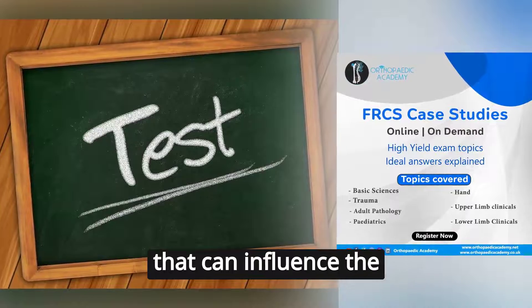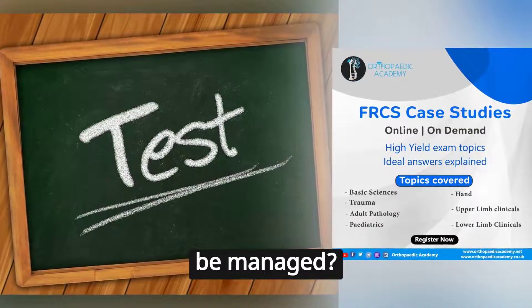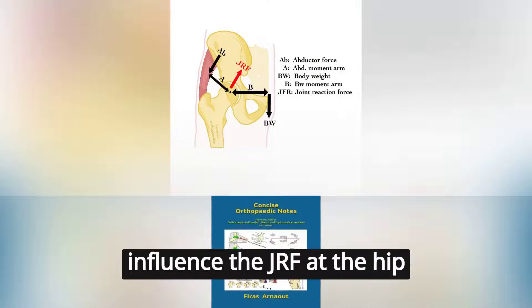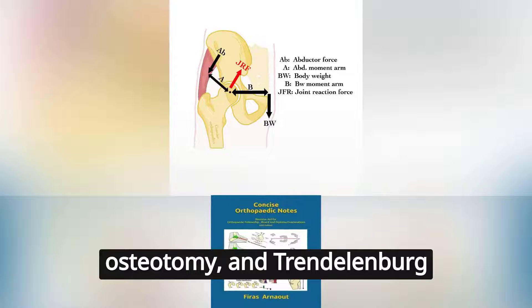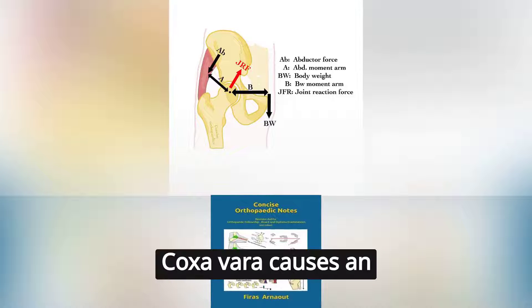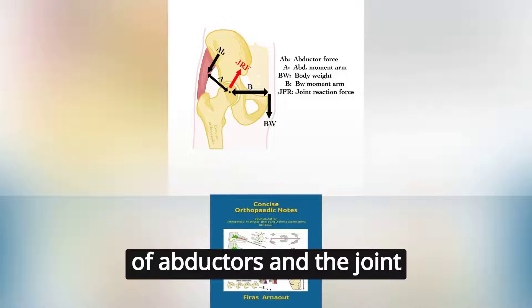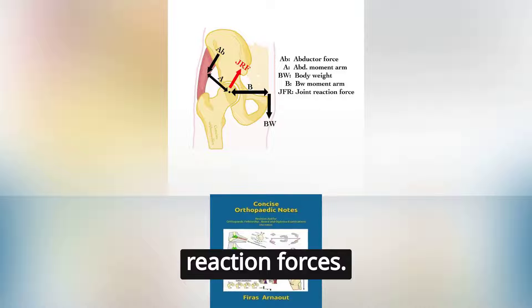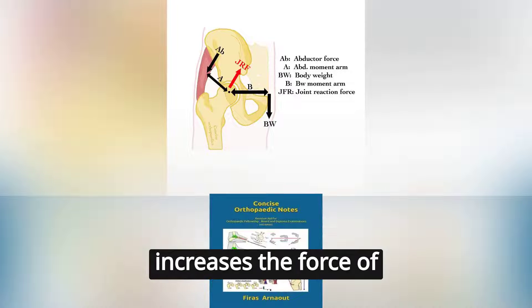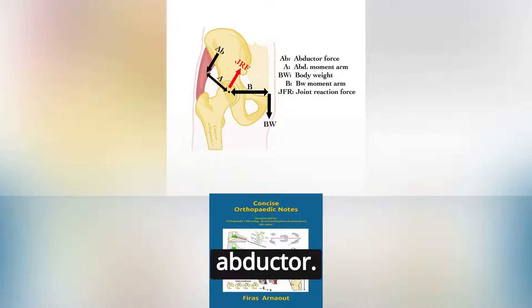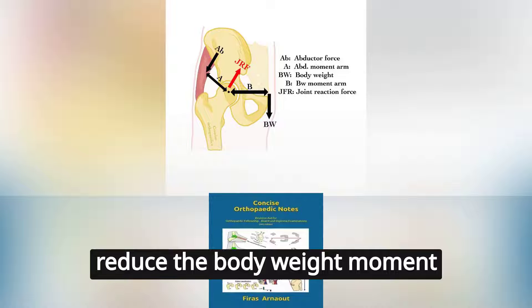Can you describe the factors that can influence the JRF at the hip joint and how they can be managed? Several factors can influence the JRF at the hip joint, such as coxa vara, valgus osteotomy, and Trendelenburg gait. Coxa vara causes an increase in the abductor moment arm, which reduces the force of abductors and the joint reaction forces. Valgus osteotomy causes a shortening of the abductor moment arm and therefore increases the force of the abductors. Trendelenburg gait involves shifting the patient's body weight to reduce the body weight moment arm.